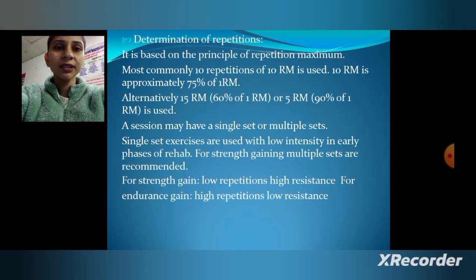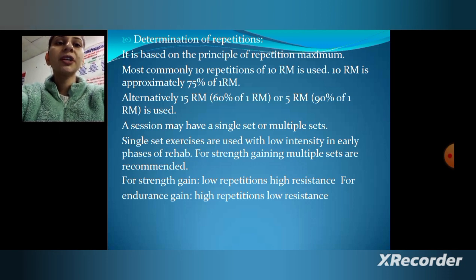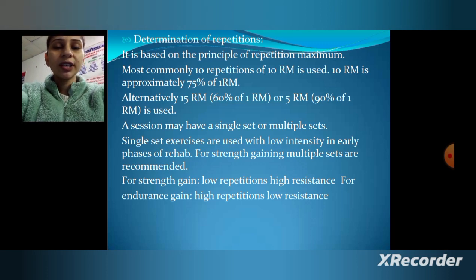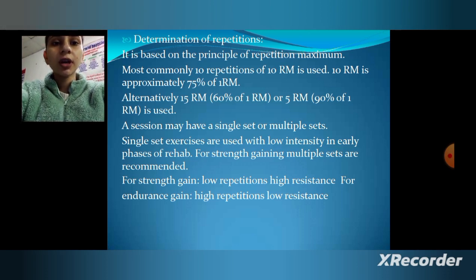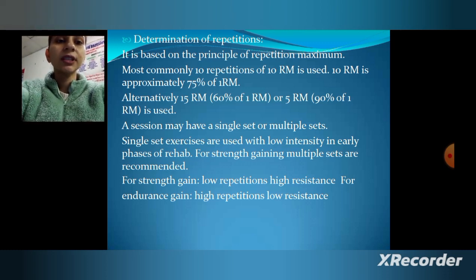The determination of repetitions is based on the principle of repetition maximum. Most commonly, 10 RM is used. 10 RM is approximately 75% of 1 RM. Alternatively, 15 RM (approximately 16% of 1 RM) or 5 RM (approximately 90% of 1 RM) may be used. A session may have a single set or multiple sets.